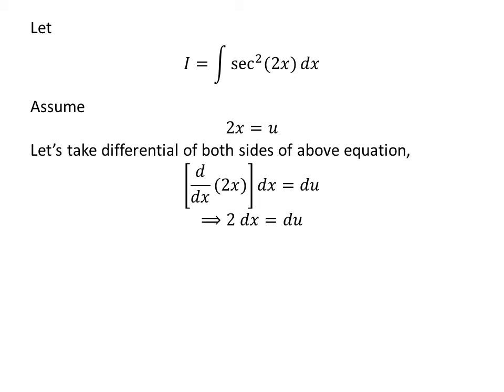As we know, d/dx(2x) = 2. So, we are left with 2dx = du. Shifting 2 to right gives us dx = (1/2)du.